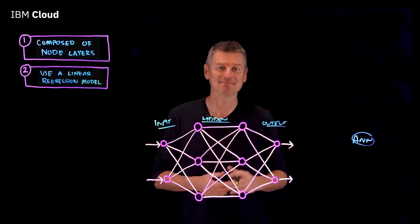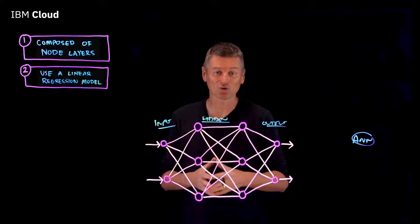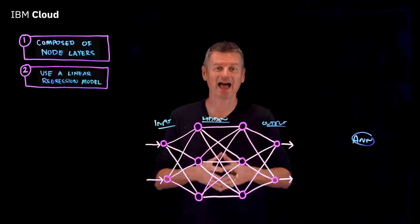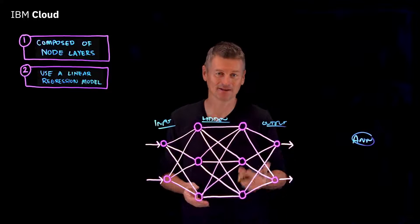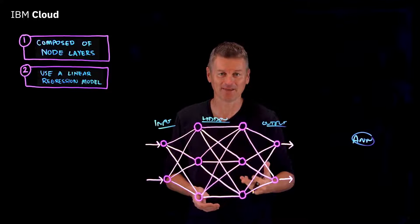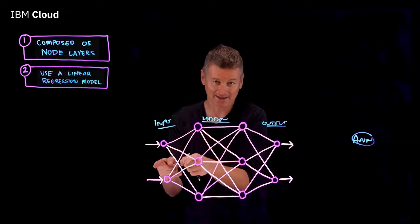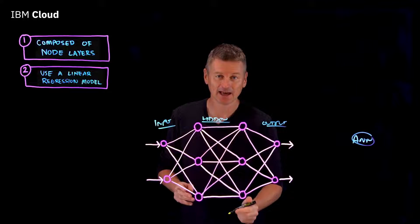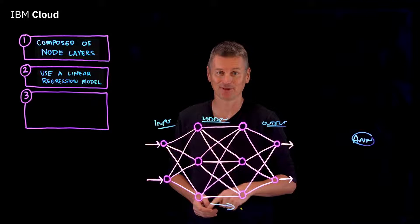Linear regression is a mathematical model used to predict future events. The weights of the connections between nodes determines how much influence each input has on the output. Each node is composed of input data, weights, a bias or threshold, and an output. Data is passed from one layer to the next in what is known as a feed-forward network. Number three,